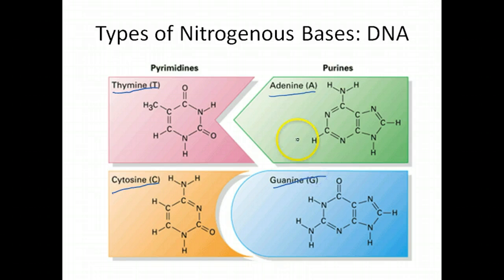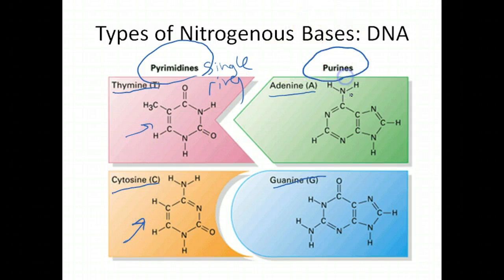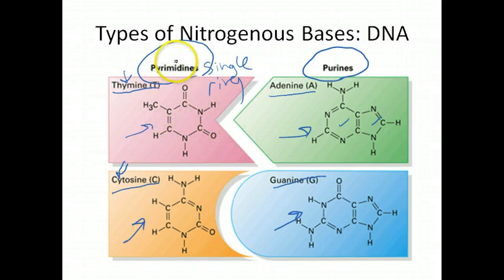You can lump these bases into two broad categories: the pyrimidines, which are these single ring structures shown here and here, and also your purines, which are the double ring structures. One of the things we talked about in class is a mnemonic device to help you identify pyrimidines versus purines. If you look in pyrimidine, there's a Y, and there's also a Y in thymine and a Y in cytosine. You'll have to remember that pyrimidines are the single ring structures, whereas purines are the double ring structures.